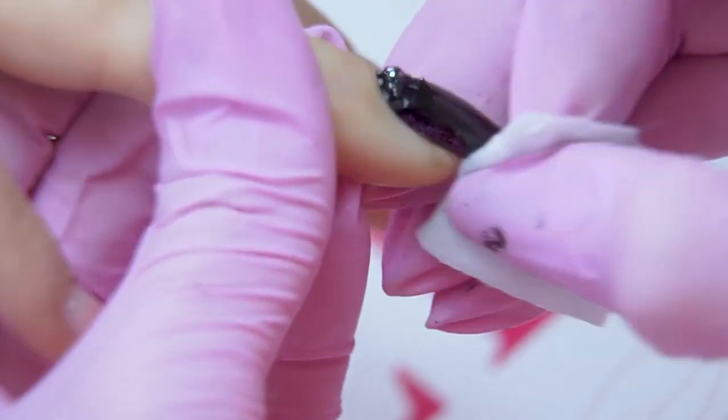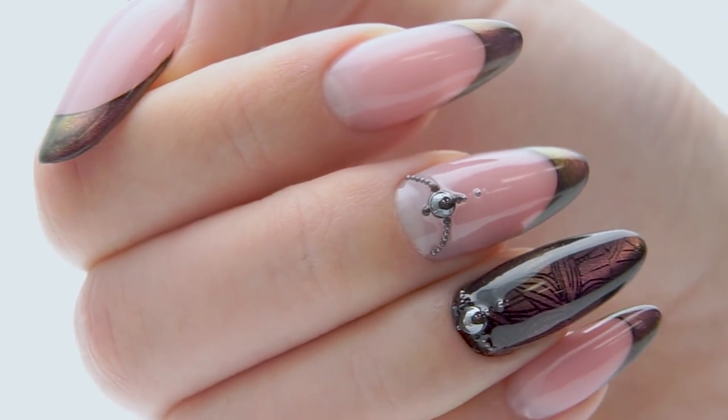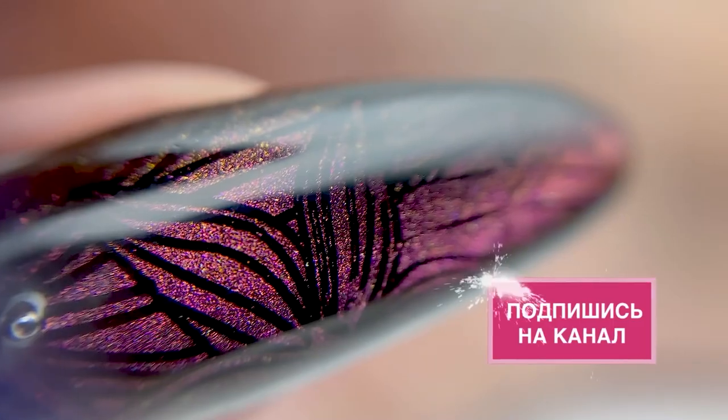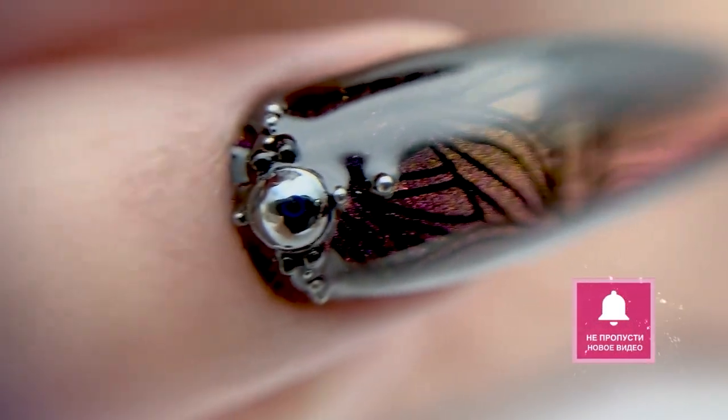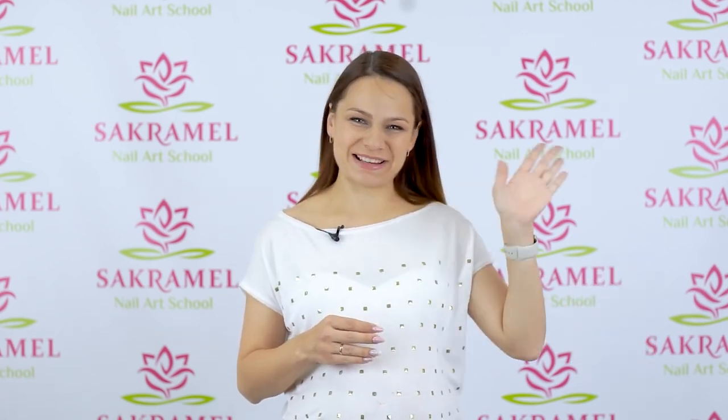I remove the rest of the paint from the skin. And here is the result! The nails look great! The cat's eye shines beautifully! Write in the comments if you like this design and the sculpting technique. Subscribe to the channel to keep up with our new videos! Success in your work! Bye-bye!